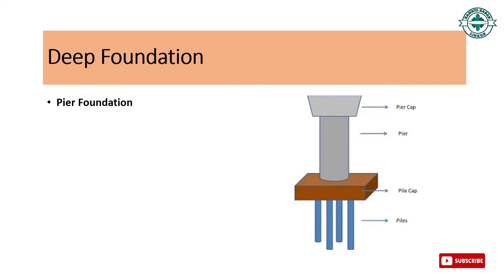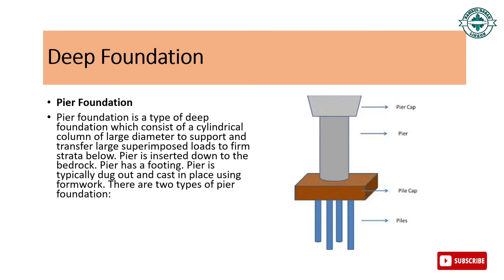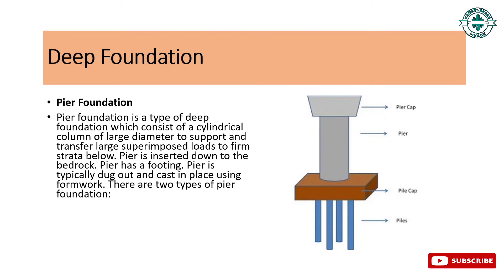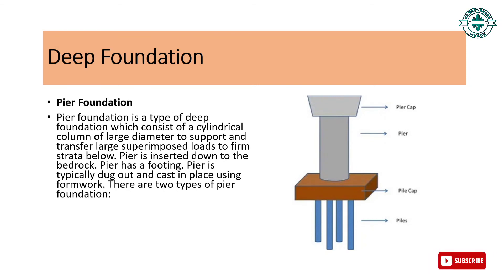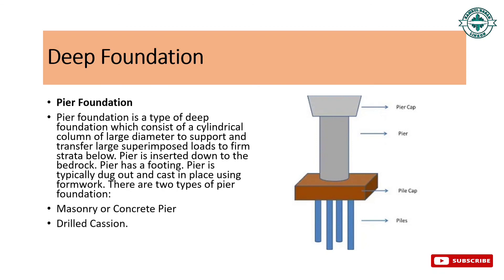Pier foundation: pier foundation is a type of deep foundation which consists of a cylindrical column of large diameter to support and transfer large superimposed loads to firm strata below. The pier is inserted down to the bedrock and has a footing. The pier is typically dug out and cast in place using formwork. There are two types of pier foundation: masonry or concrete pier, and drilled caisson. This type of foundation is basically used in bridges.